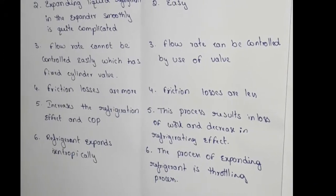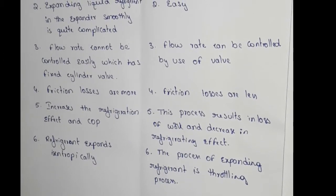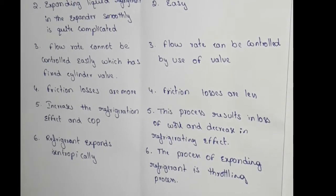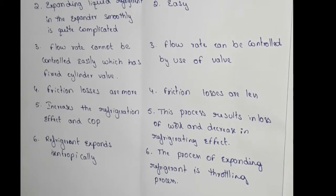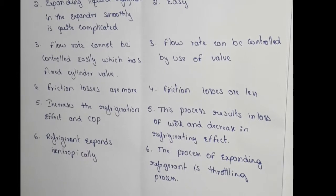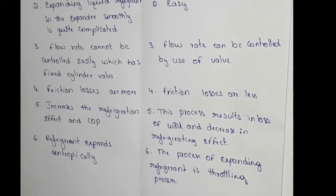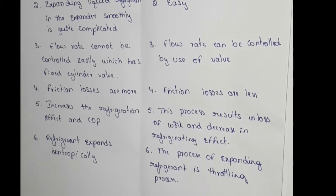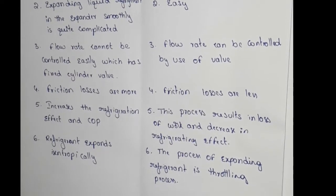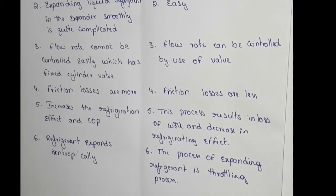Third point: flow rate control. In the expansion cylinder, the flow rate cannot be controlled easily because it has a fixed cylinder. In the throttle valve, the flow rate can be controlled easily by using the valve, so we can control the flow rate easily.